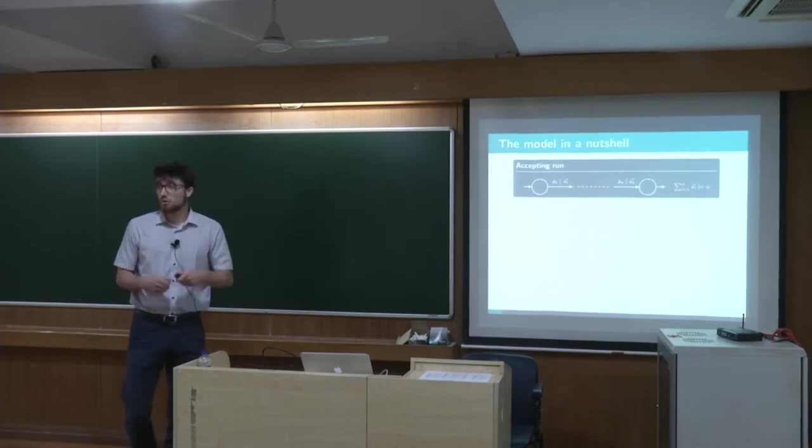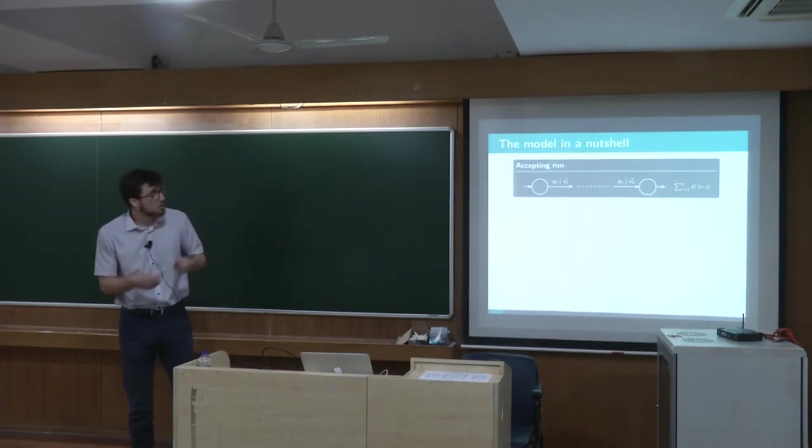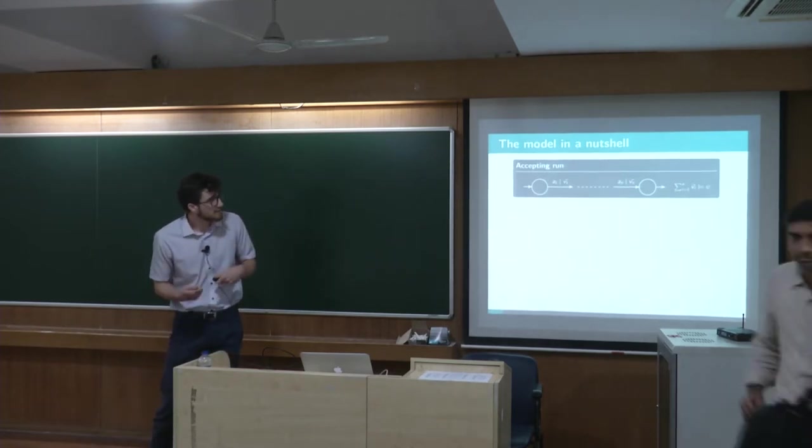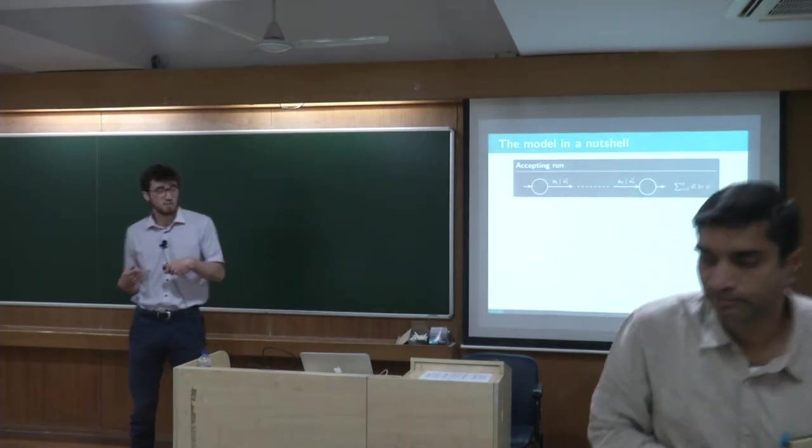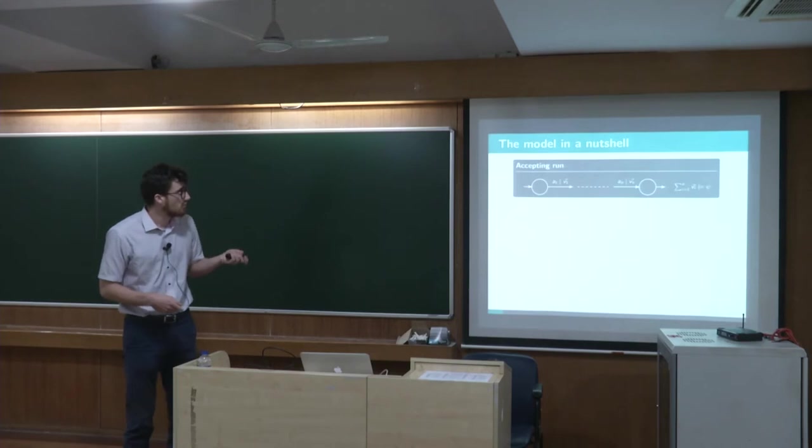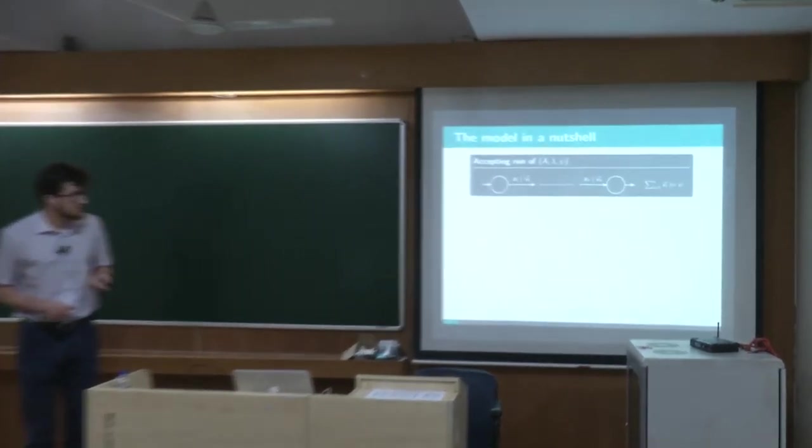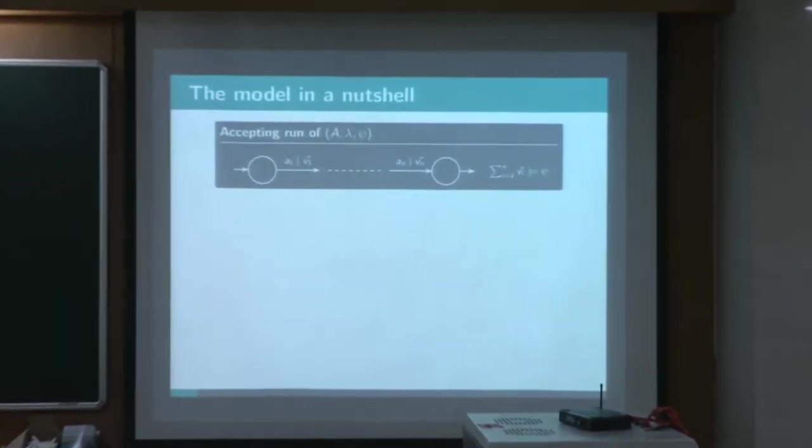And to check if a run is accepted or not, consists to check whether this value belongs to a semi-linear set, and this semi-linear set is given here by a Pressburger formula. So a Parikh Automata is then represented as an automaton, a labeling, and a formula.